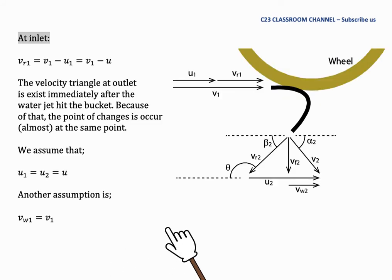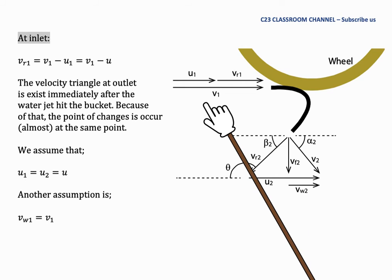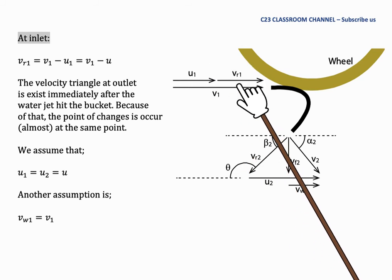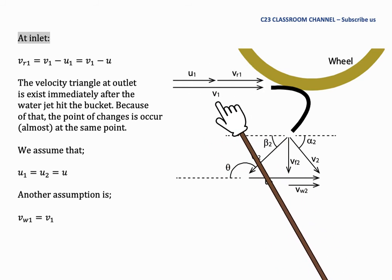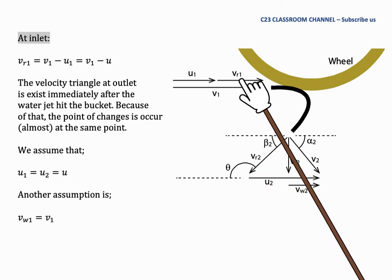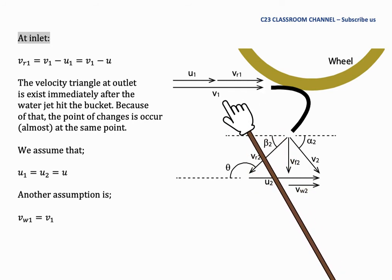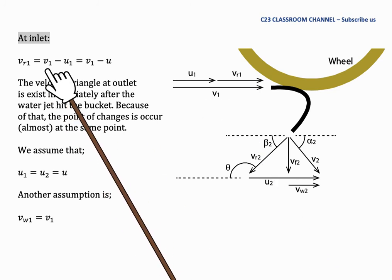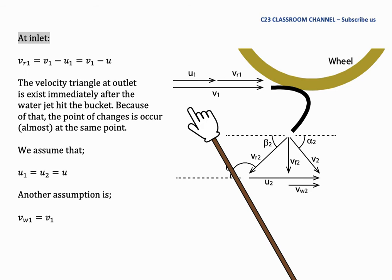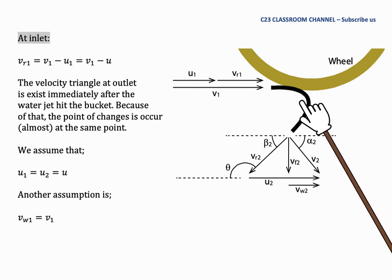So this is the velocity triangle at the inlet. We have the absolute velocity V1 and its components U1 and VR1. We can rewrite the value of VR1 as V1 minus U1.